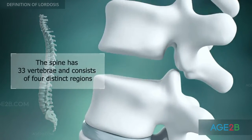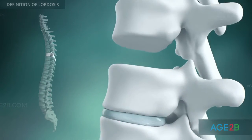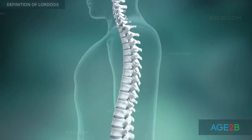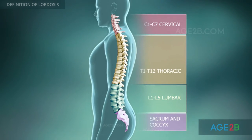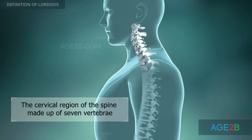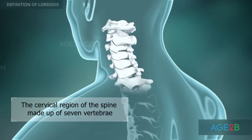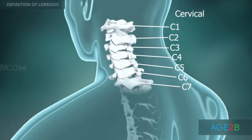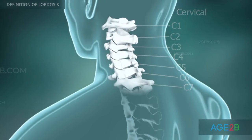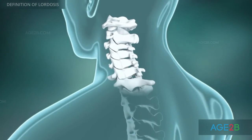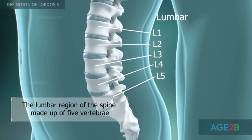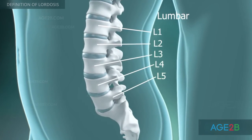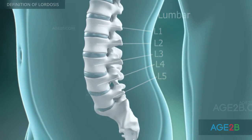The spine is composed of 33 individual bones in four distinct regions. The bones of the spine are called vertebrae, and each is numbered. The cervical region of the spine is made up of seven vertebrae, designated as C1 through C7. The lumbar region of the spine is made up of five vertebrae, designated as L1 through L5.